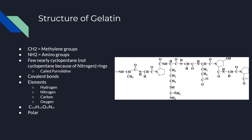These are called pyrrolidine rings, not cyclopentane. These are pyrrolidine rings right here, and that's because they have this nitrogen in them. These elements are covalently bonded, and the elements contained in the molecule are hydrogen, nitrogen, carbon, and oxygen.